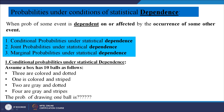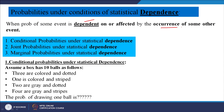Now we will see probabilities under conditions of statistical dependence. When I say dependence, the outcome of the second event depends on the outcome of the first event. The probability of some event is affected by the occurrence of some other event. Again there are three types: marginal, joint, and conditional.